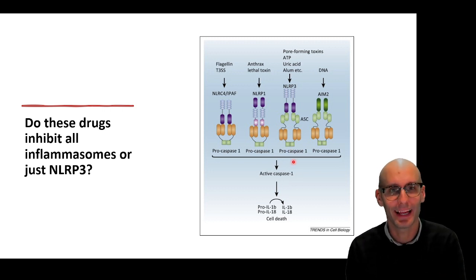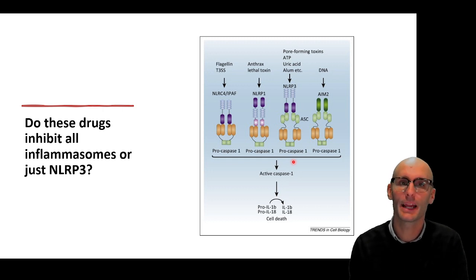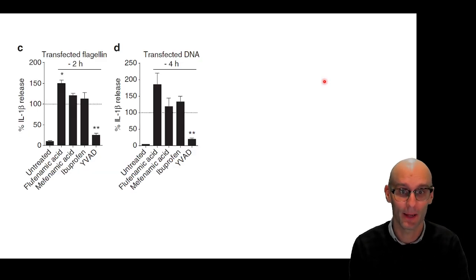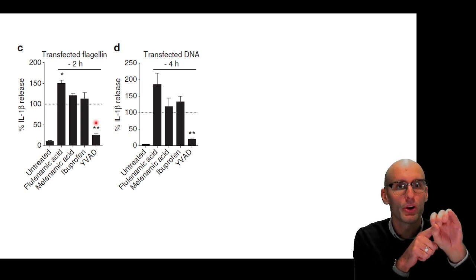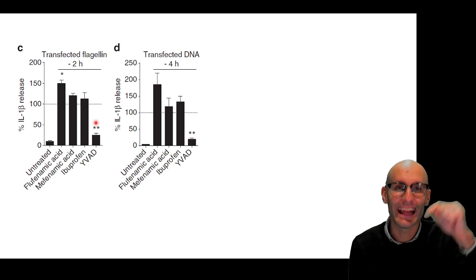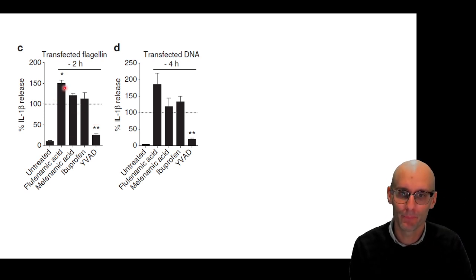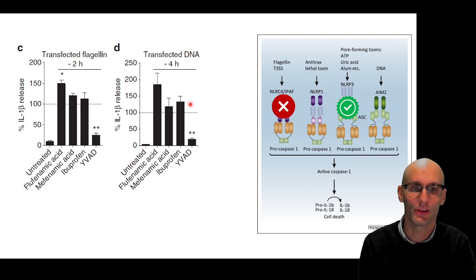So do our NSAIDs or our non-steroidal anti-inflammatories also inhibit the other inflammasomes or is it selective for the NLRP3? So once again we take macrophages, we activate them with LPS and then we either give them flagellin or we give them DNA to see if that activates the inflammasomes and can we inhibit the IL-1 release in response to those stimuli. So here we have flagellin. Now it's got to get into the cytosol. So we have to actually transfect it which sounds weird but basically we put it in a little fat ball that will then fuse with the membrane and then you end up with flagellin in the cytosol. And you can see that we get IL-1-beta release and it's not blocked by flufenamic acid, mefenamic acid or ibuprofen. And we did it again with DNA because that will activate the AIM2 receptor and it was not blocked again by our drugs. So in other words our drugs work on NLRP3 but they do not work on NLRC4 which is stimulated by flagellin or AIM2 which is stimulated by DNA.